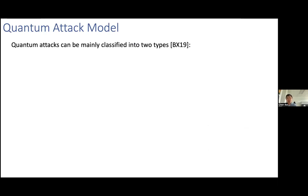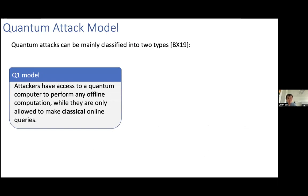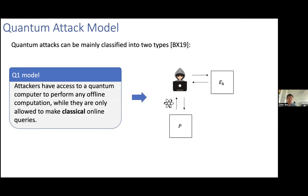Next I want to talk about the quantum attack models in symmetric crypto. Quantum attacks can be mainly classified into two types. The first is the Q1 model, where attackers have access to a quantum computer to perform offline computation, while they are only allowed to make classical online queries. Applied to the Even-Mansour cipher, the adversary has classical access to the keyed permutation E_K and quantum access to the public permutation P. This means the adversary can talk with an honest user classically, asking them to encrypt messages and receive ciphertexts classically, while also making quantum queries locally on the public permutation P.